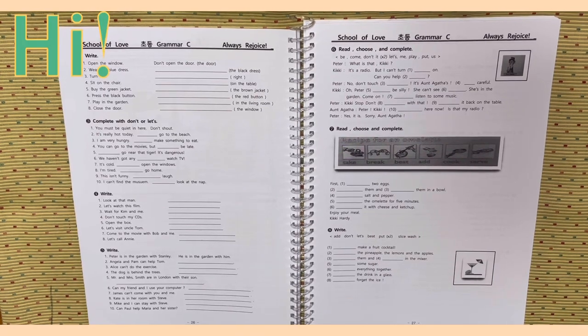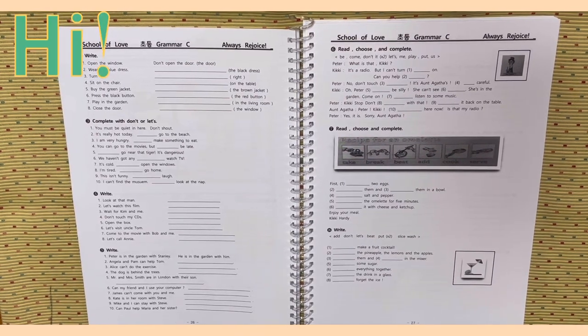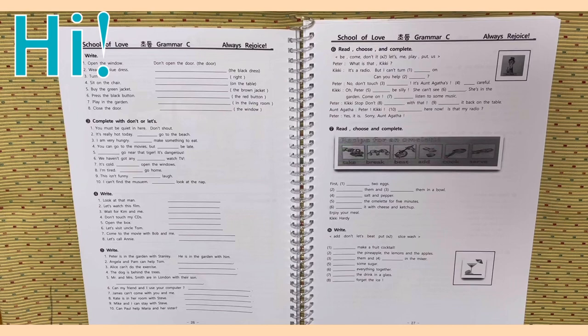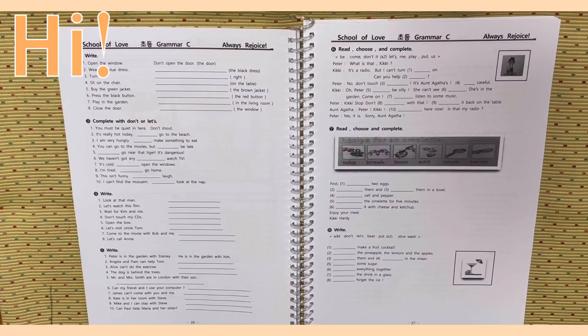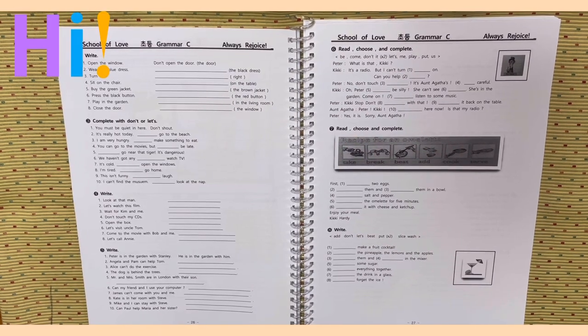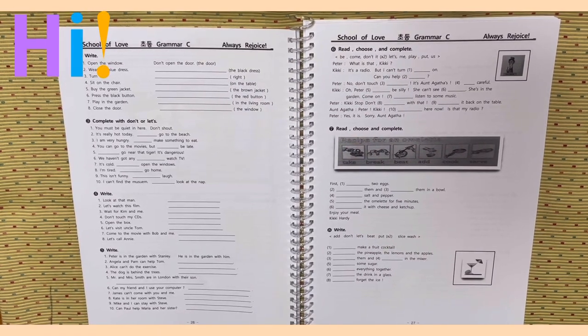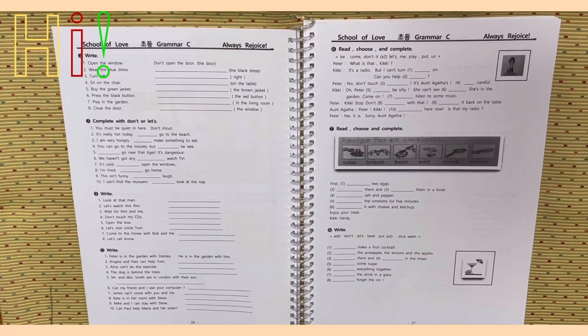Activity 3. Complete with don't or let's. Number 1. You must be quiet in here. Don't shout. It's really hot today. Blank, go to the beach. I'm very hungry. Blank, make something to eat. You can go to the movies, but blank, be late.